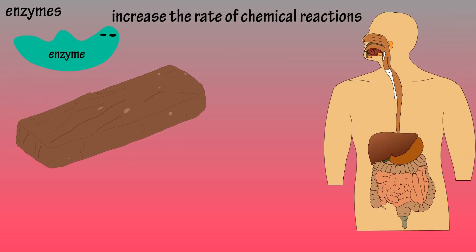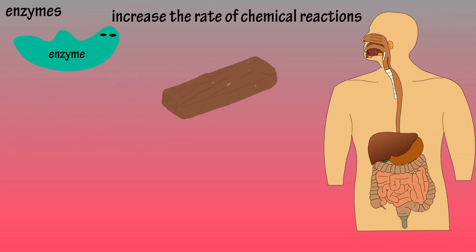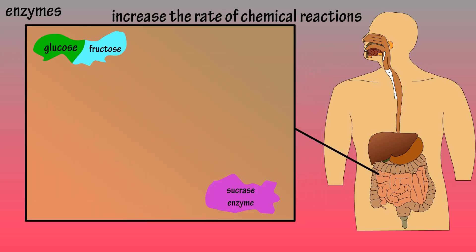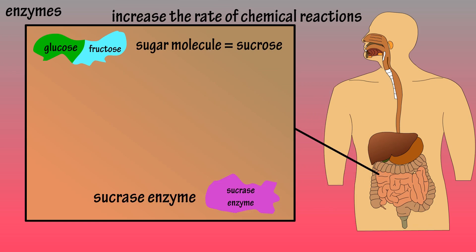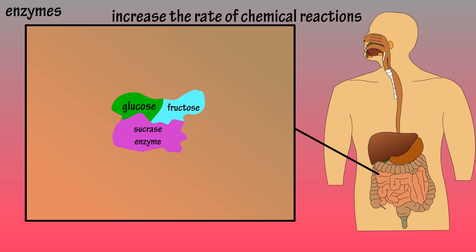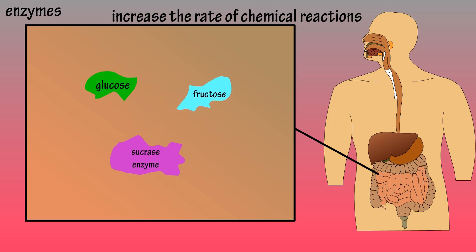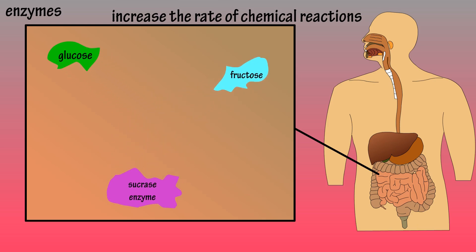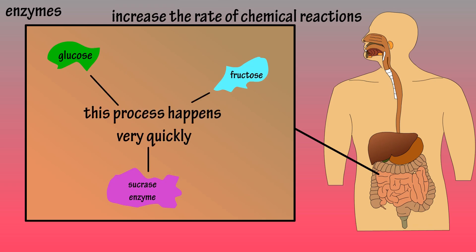For example, let's say you were to eat something that had sugar in it. Well, in the intestine, the sugar molecule, also known as sucrose, would encounter an enzyme called sucrase. And this sucrase enzyme would come in and unbind the sugar molecule to its more basic components of glucose and fructose. Enzymes are able to do this chemical reaction very quickly, so you can see they play an important part in our body.